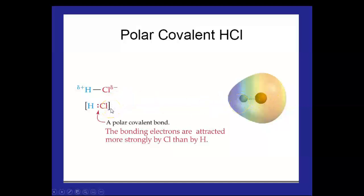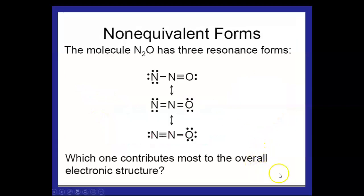Because the bonding electrons are attracted more strongly by the electronegative chlorine than by the less electronegative hydrogen. So this is a polar covalent bond, symbolized here by a dash. That's how AP likes to see it. Symbolized here, of course, by the two dots showing two electrons being shared.